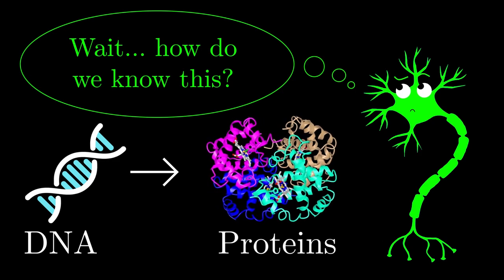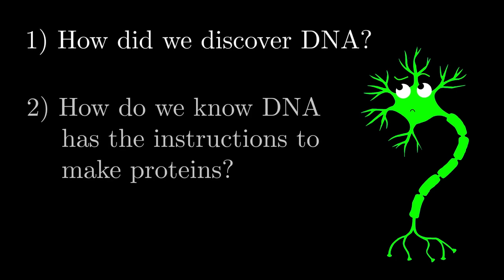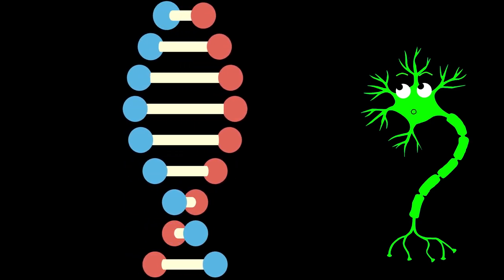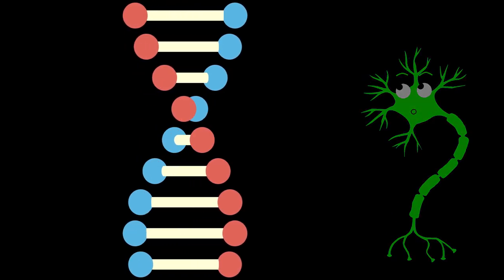So our goal today is to answer two questions. One, how did scientists discover DNA? And two, why were they convinced that DNA held the instructions to make proteins? And by going through these questions, the goal is for you to see DNA as something that makes sense, rather than a bunch of concepts to memorize.